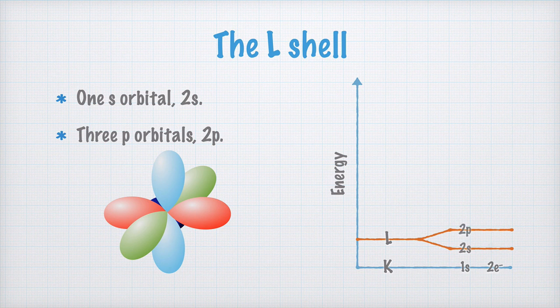Since each orbital may contain maximally two electrons, there may be only two electrons in the 2s orbital. In each p orbital, there may also be two electrons, and so in all three of them, there may be up to six electrons.